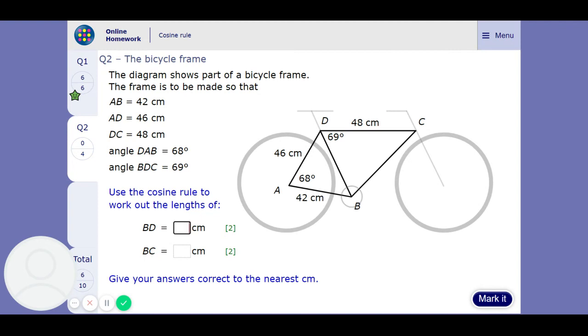So we're going to be doing the same sort of thing as we did before. So 46 squared plus 42 squared take away 2 times 46 times 42 times cos 68. I'm going to get that first one, it's going to be near a centimeter. So 49 centimeters.